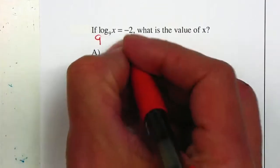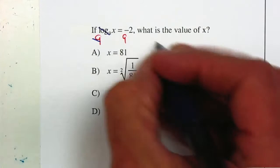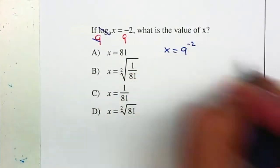Opposite of a log is a base, so I'm going to place a big 9. I'm going to exponentiate both sides. That cancels. So I have x is equal to 9 to the power of negative 2.